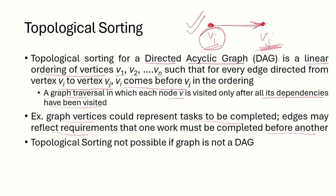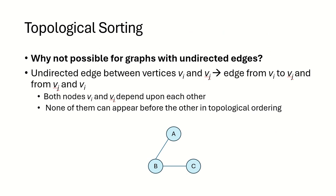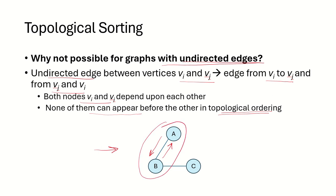Topological sorting is not possible if the graph is not a directed acyclic graph. Why is it not possible for graphs with undirected edges? If there is an undirected edge between v1 and vj, that means there is an edge from v1 to vj and from vj to v1. If both nodes are dependent upon each other, none of them can appear before the other in topological ordering, because we cannot say where the edge is beginning from. So topological sorting is not possible with undirected edges.